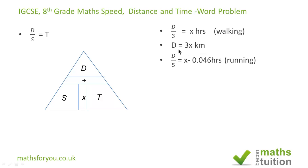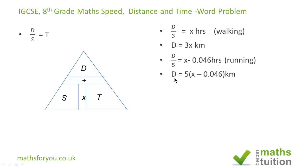When he runs, if you divide the distance by his speed of five kilometers an hour, his time is x minus 0.046 hours, because he gets to school 0.046 hours earlier when he runs. That makes the distance 5 times (x minus 0.046) kilometers, which is what you get when you cross multiply.